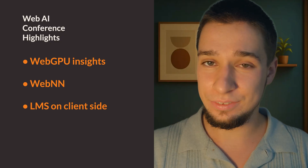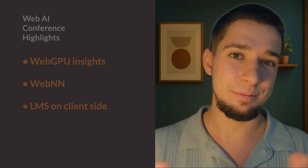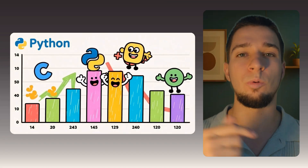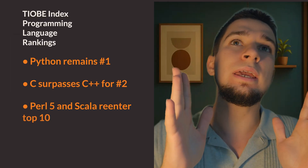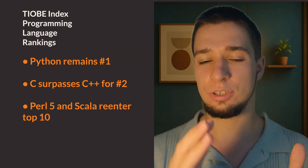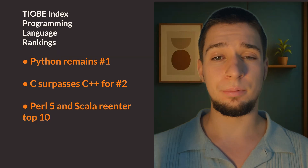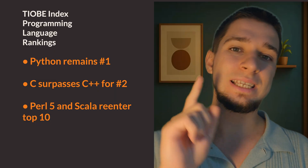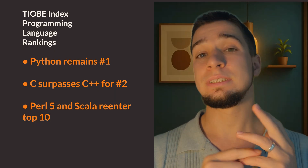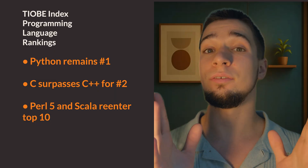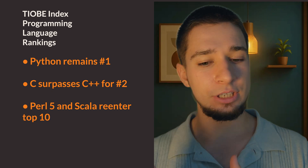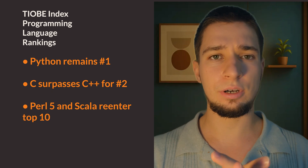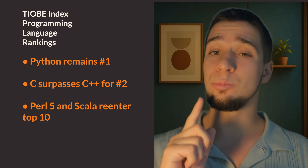We'll be looking at more in the next videos about WebAI. The GoB Software Index shifted again. We have no changes for our top leaderboard — for example, Python is remaining at number one — but we have some interesting changes: C, SQL, and Perl 5. Perl 5 and SQL re-entered the top 10 of programming languages.